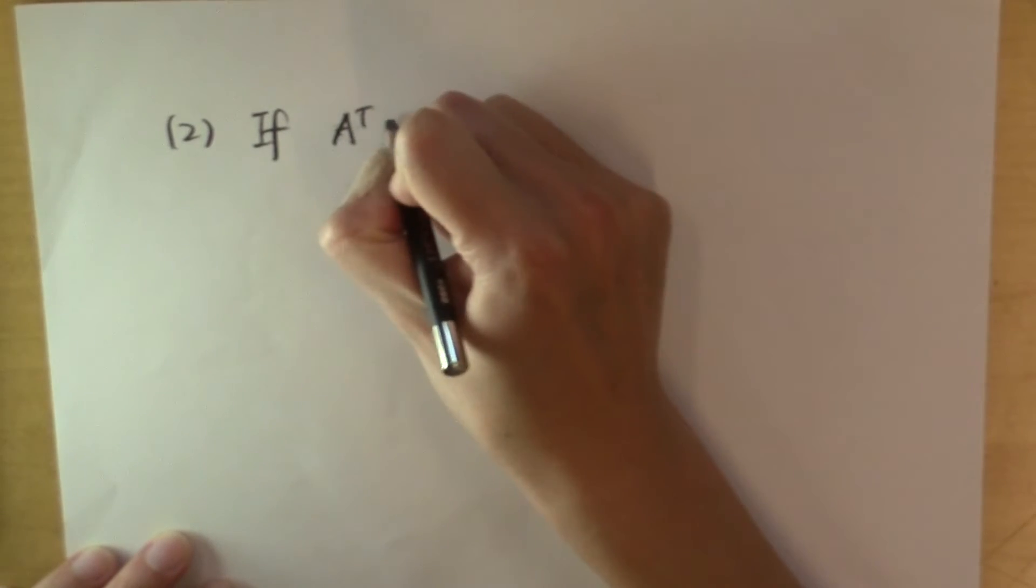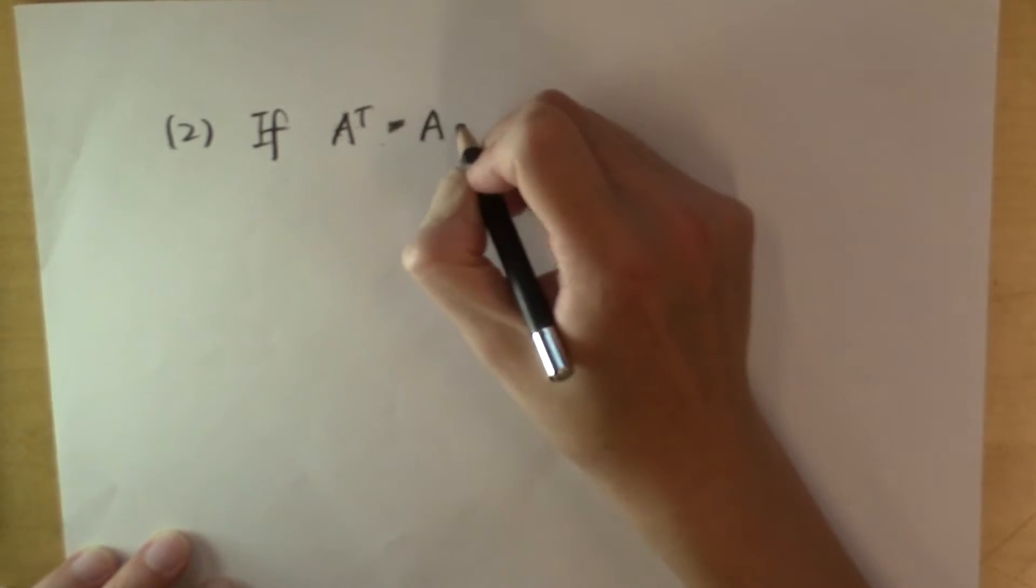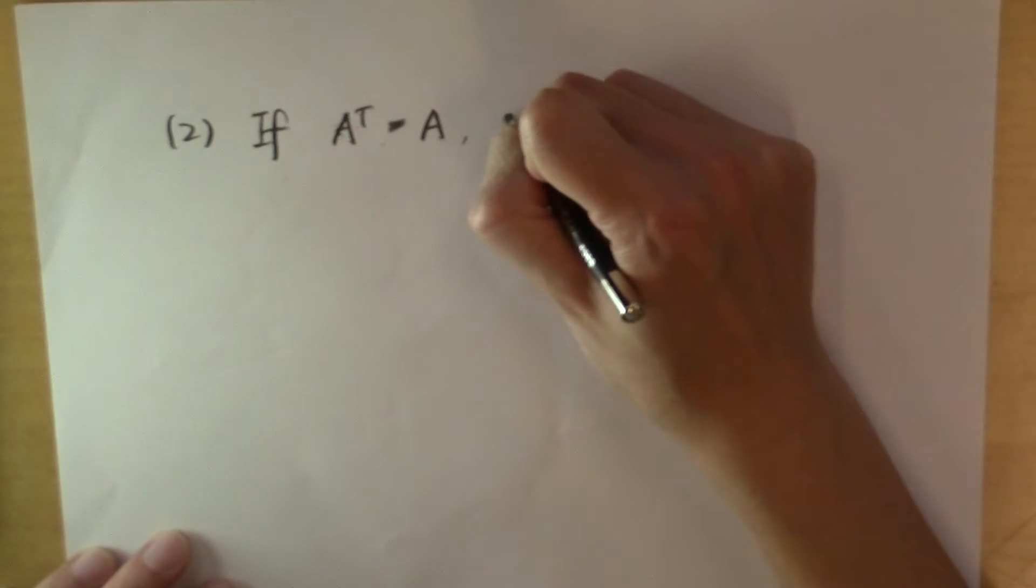The second nice thing is that transposition allows us to identify certain special matrices that have some symmetry in it. And to see this, let me ask you: if the transpose of A is equal to A itself, what does that mean?